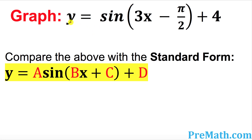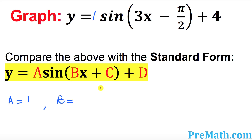Before we get started, I want you to compare this function with our standard form, which is y equal to a sine of bx plus c, plus d. The coefficient before sine is one. Once we compare these two, a turns out to be one, b turns out to be three, c is negative pi over two, and d equals four.